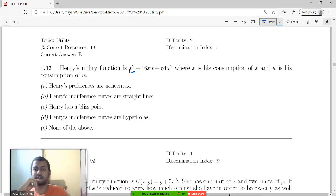Henry's utility function is x² + 16xw + 64w², where x is his consumption of x and w is his consumption of w. Henry's preferences are non-convex straight lines.